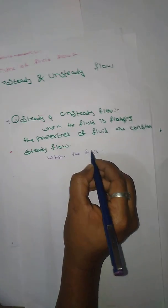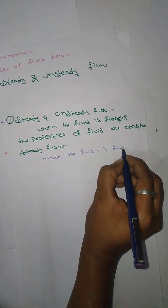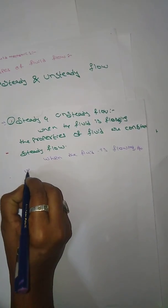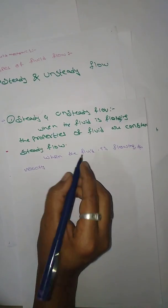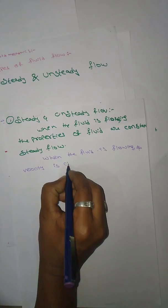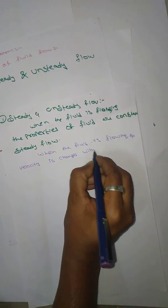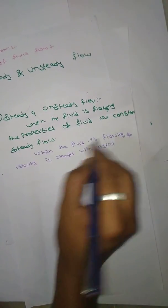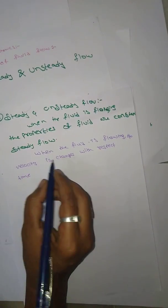When the fluid is flowing, the velocity will be considered as the properties of fluid. The properties of fluid are changing with respect to time. With respect to time, the name is steady.